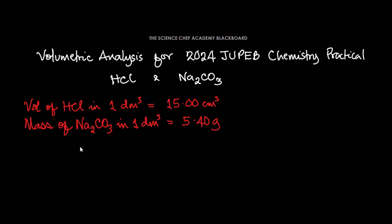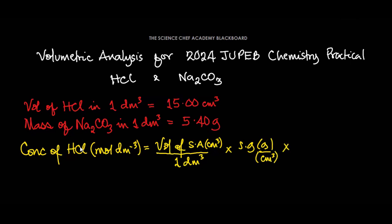To calculate the concentration of the acid, we use the formula: concentration of HCl in mol/dm³ equals the volume of the acid SA in cm³ per dm³ times the specific gravity of the acid in g/cm³, then times the purity of the acid or the percentage by weight of the acid in the stock solution, and then divided by the molar mass in g/mol.